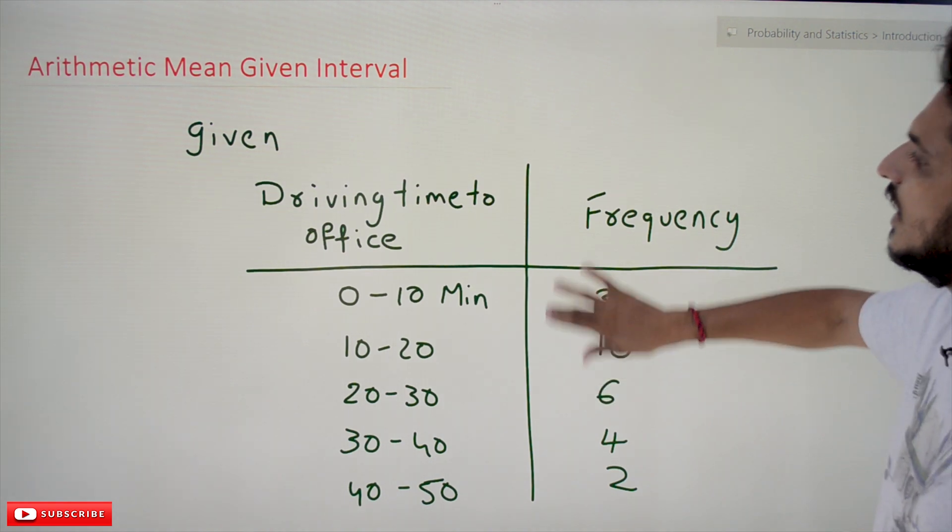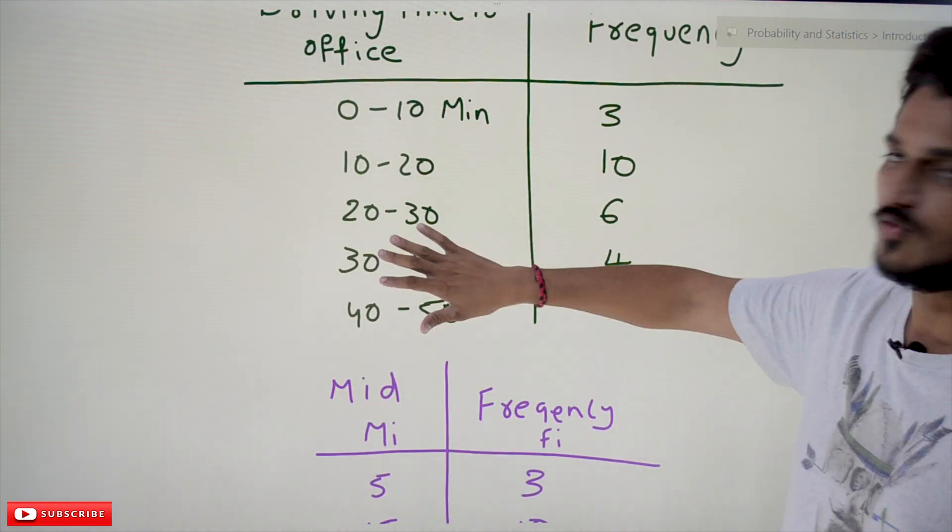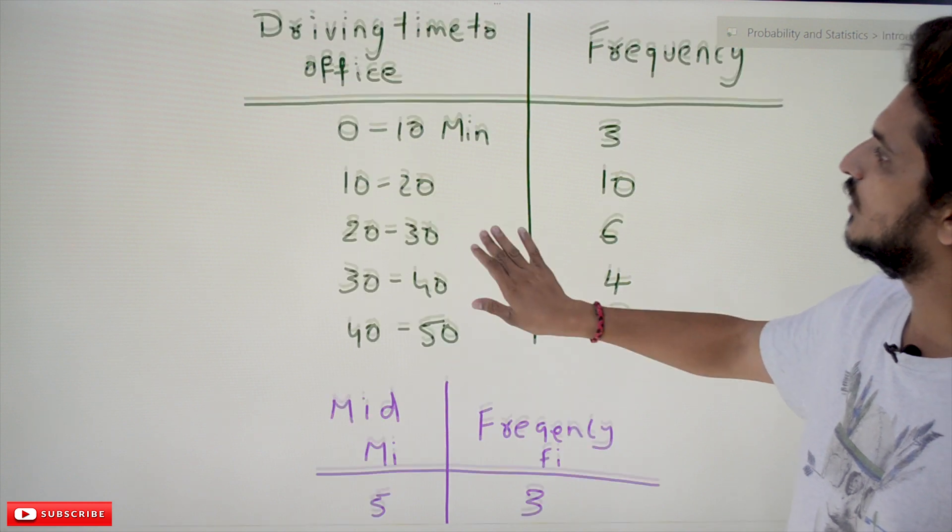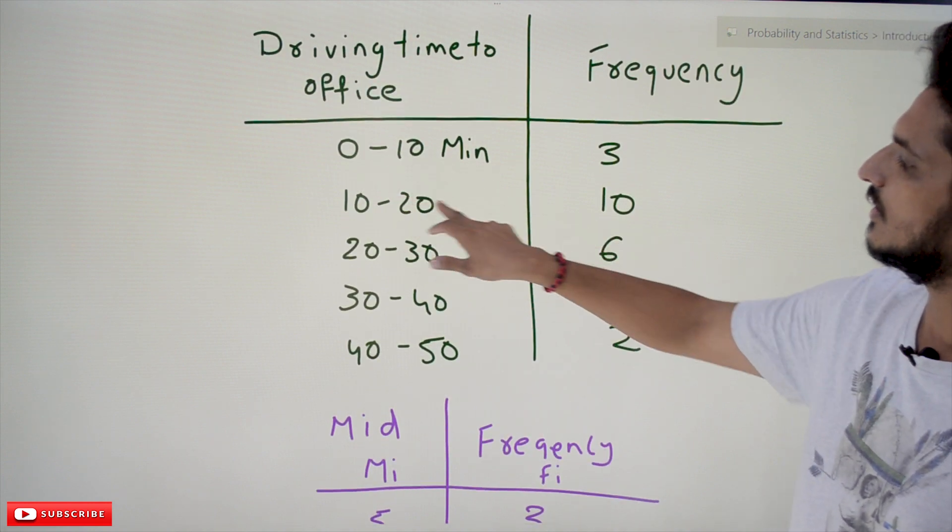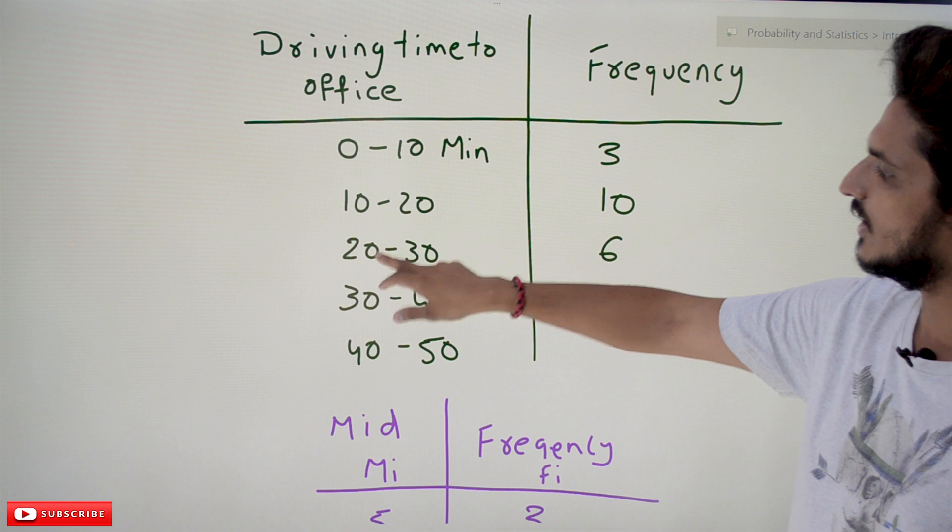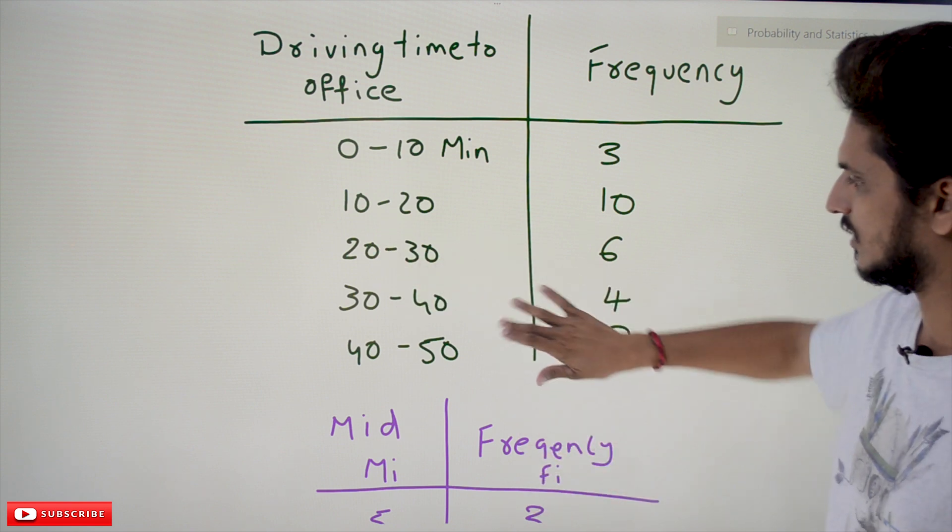So these interval values are converted into mid values. We will take the midpoint of this interval, we will take the mid value of this interval. Like that we have to take the mid values.